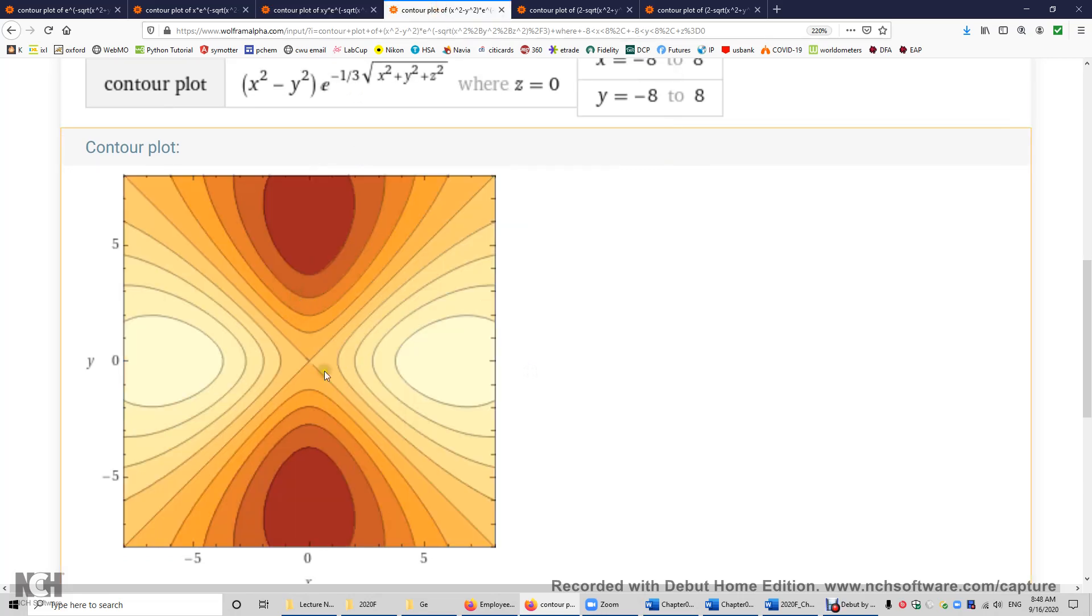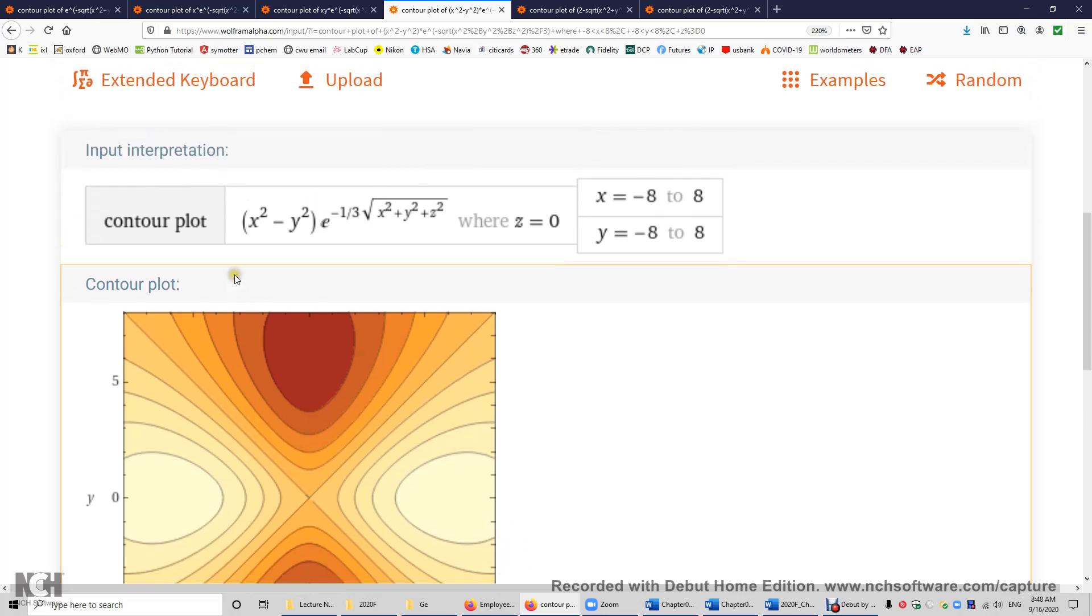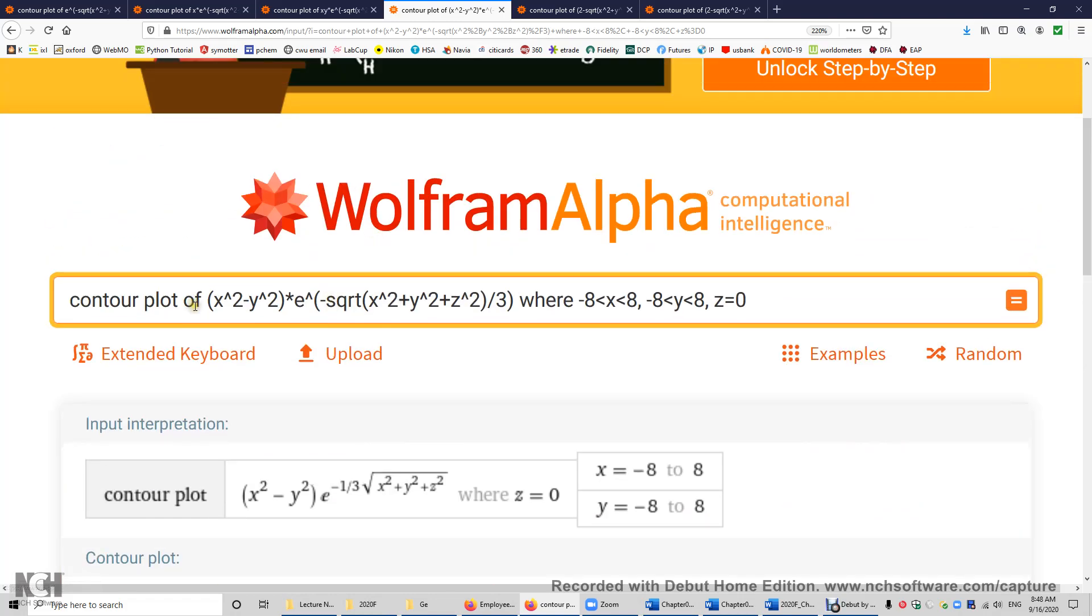I'm going to show you another d orbital. So again, this is x, this is y. But this time, you have two different nodes. This one is y equals x. This one is y equals negative x. The function is x squared minus y squared times e to the power of negative r over 3. This is the dx squared minus y squared atomic orbital.